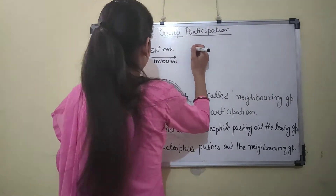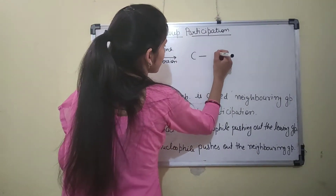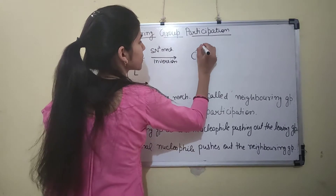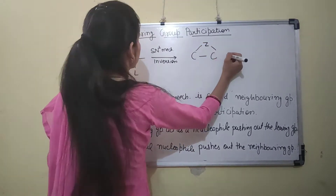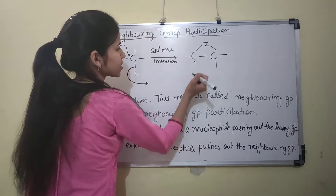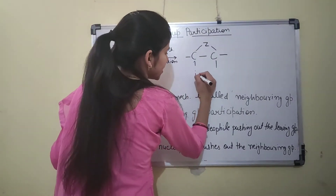They form a cyclic intermediate with the structure C–Z–C, and this cyclic intermediate is formed in the first step.